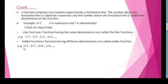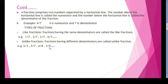For example, 2 by 3, 5 by 7, 6 by 8, and 3 by 9 — each denominator is different. So these are called unlike fractions.